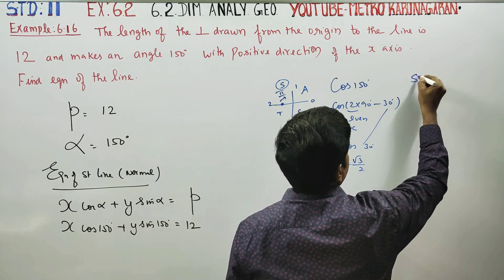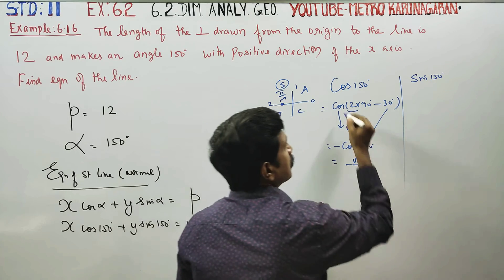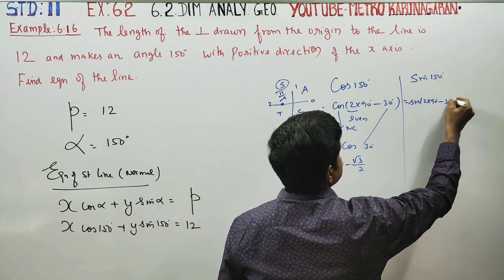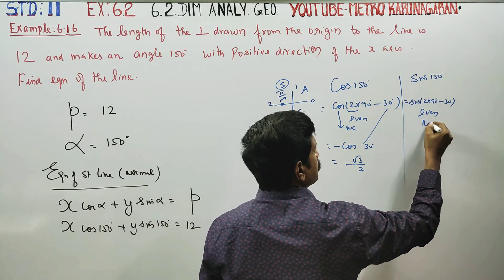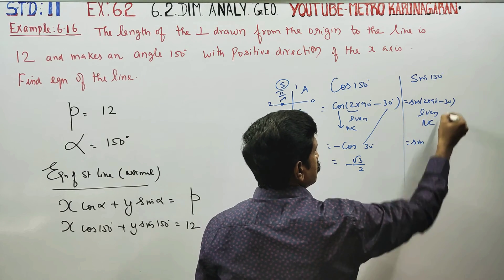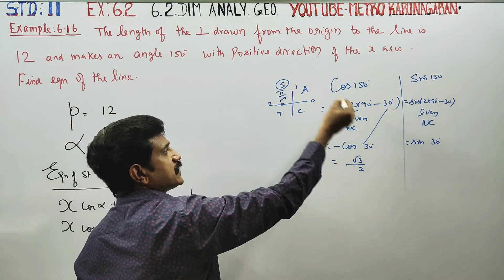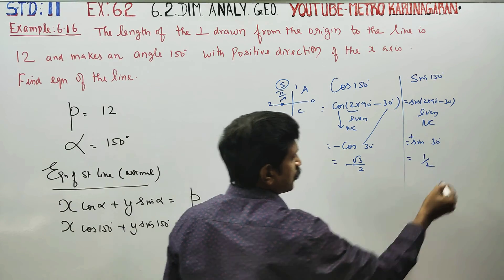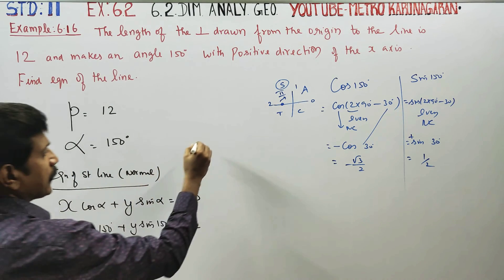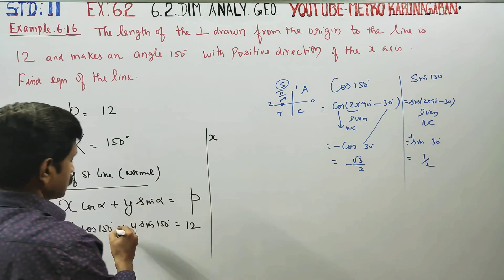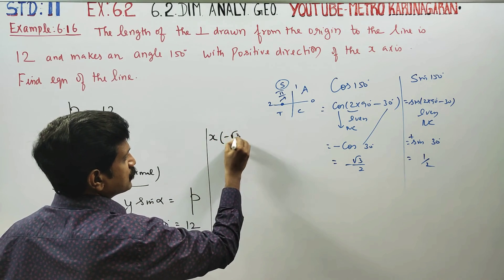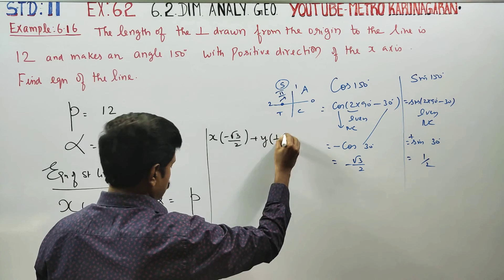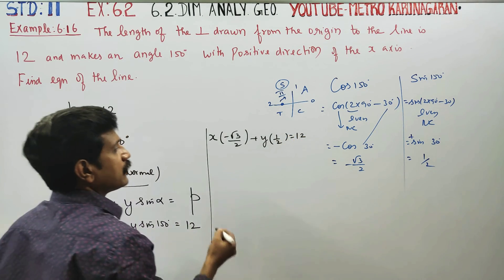Sin 150 — sin of 2 into 90 minus 30, even multiples of 90 means no change, so it becomes sin 30. Same quadrant, same angle, positive. What is sin 30? It is 1 by 2. Now substitute: x cos 150 is minus root 3 by 2, plus y sin 150 is 1 by 2, is equal to 12.